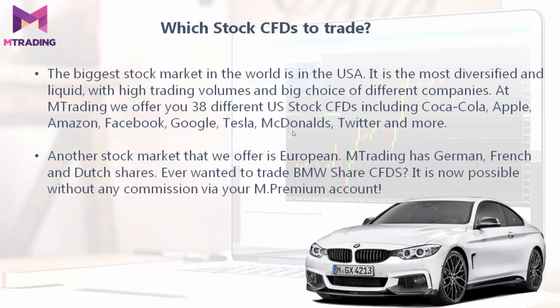The biggest stock market in the world is in the USA. It is the most diversified and liquid, with high trading volumes and a big choice of different companies. At mTrading we offer 38 different US stock CFDs including Coca-Cola, Apple, Amazon, Facebook, Google, Tesla, McDonalds, Twitter, and many more. Another stock market we offer is the European one — mTrading has German, French, and Dutch shares. If you ever wanted to trade BMW share CFDs, it is now possible without any commission via your mPremium account.